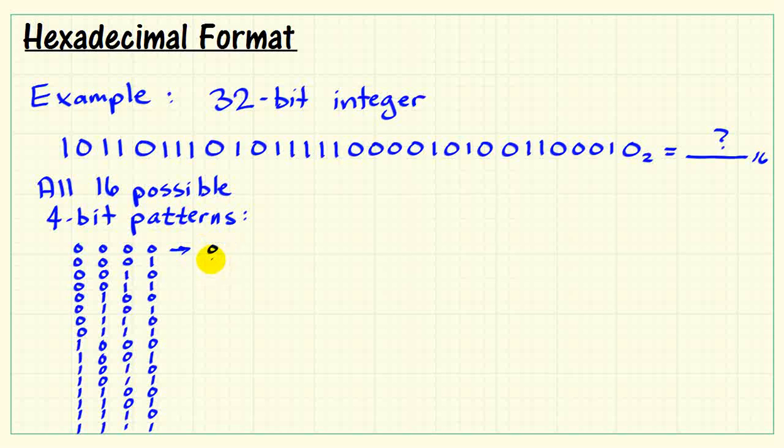Now, when we express these values or these binary patterns as unsigned integers, 0 through 9, then the question is, isn't this 10? Well, yes, it is. It is written out as 1, 0 if we were dealing with base 10. But actually, we want to think about base 16, which has 16 possible symbols.